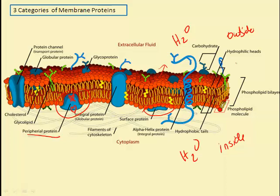Any molecule with both hydrophobic and hydrophilic regions is called amphipathic. The third category is the integral transmembrane protein, which spans across the whole membrane, appearing on both the internal and external surfaces. The sides closer to water are hydrophilic, and the part closest to the lipid tails is hydrophobic.